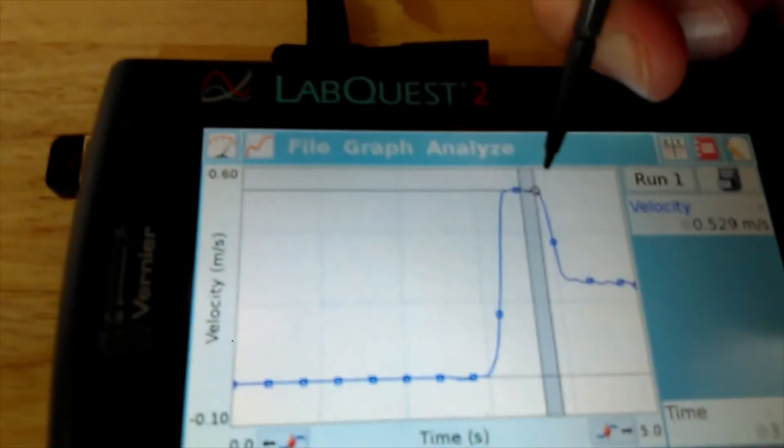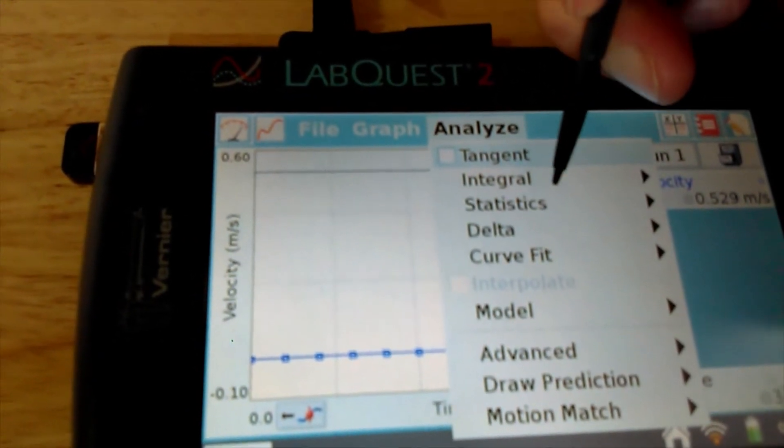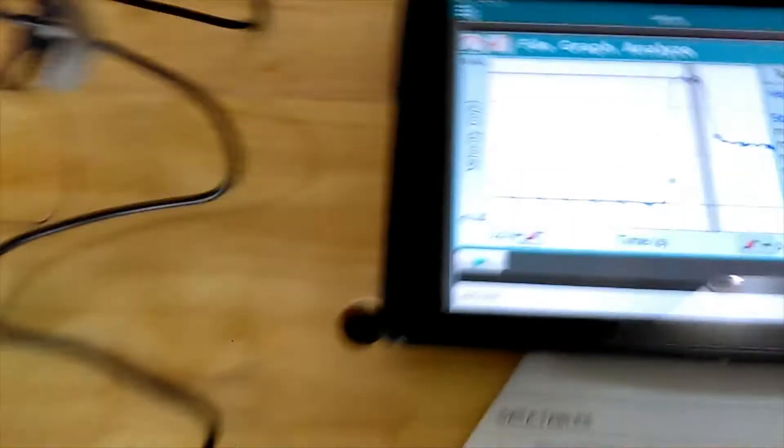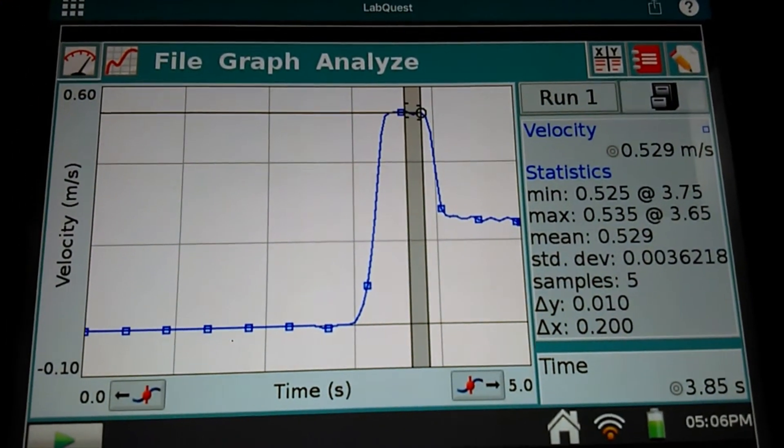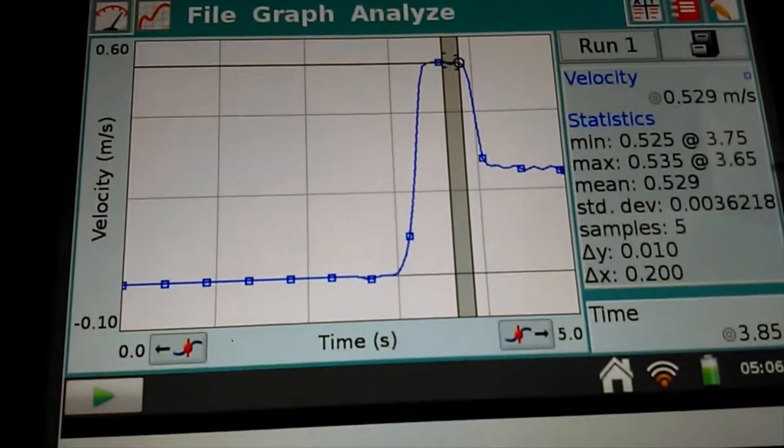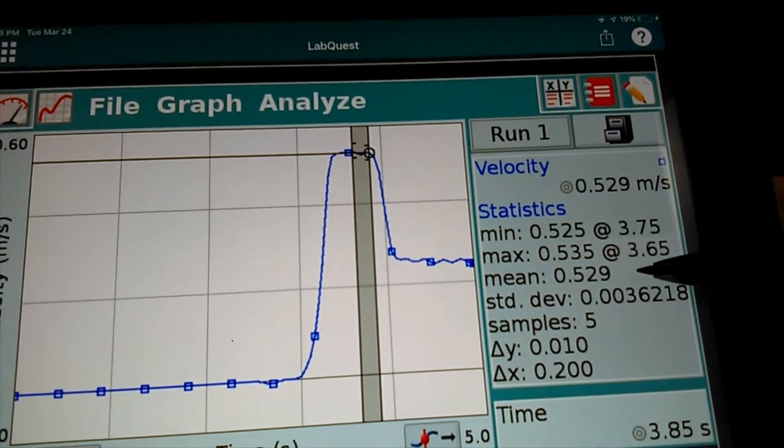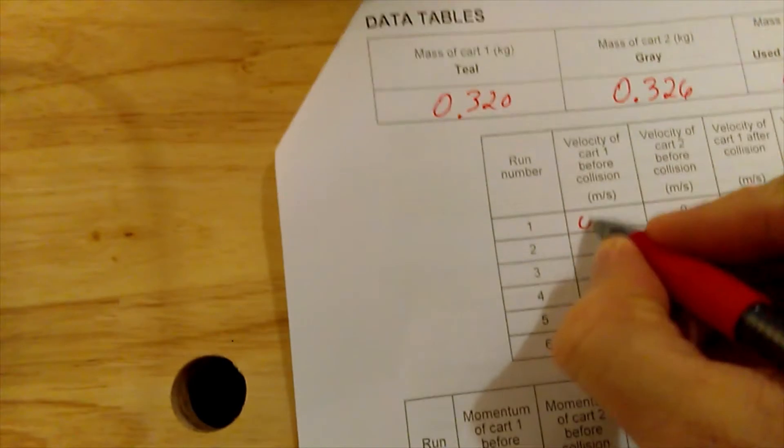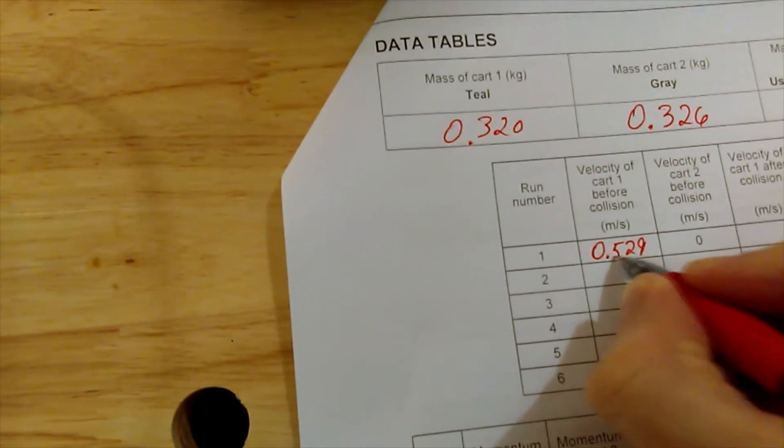I want to highlight this plateau just before the collision occurred. We'll analyze that and look at the statistics for that velocity. What we're looking for is the average velocity before the collision. The mean right here is 0.529 meters per second. That's how fast car one was traveling prior to the collision.